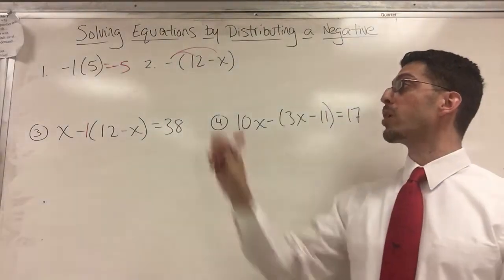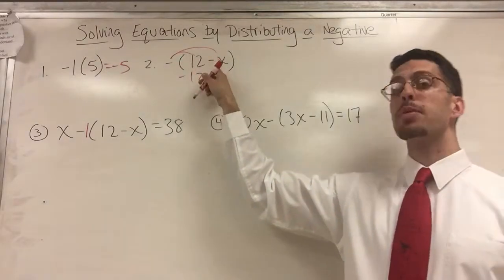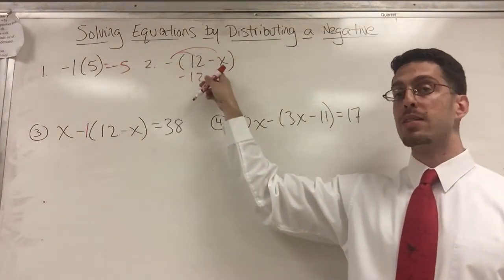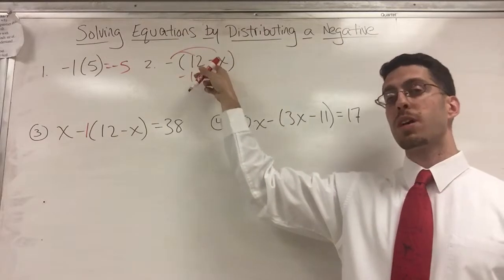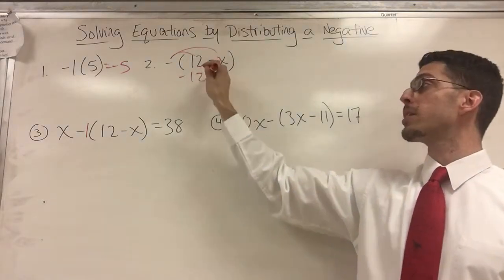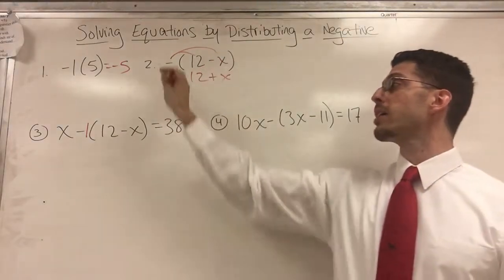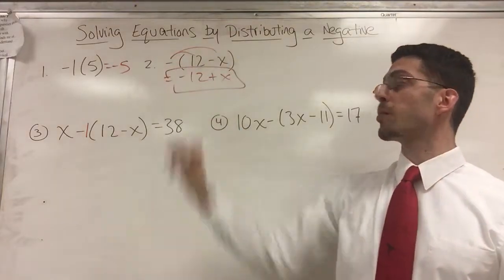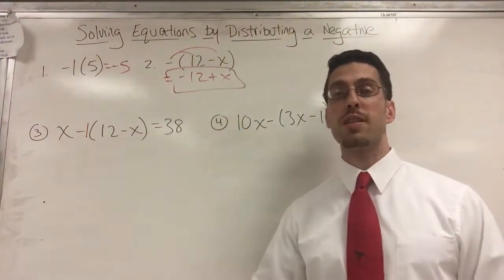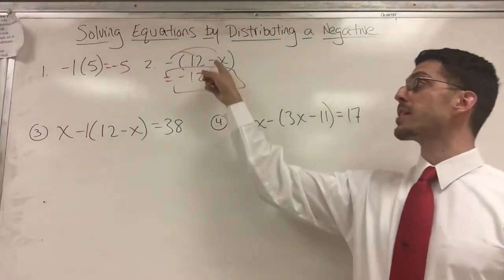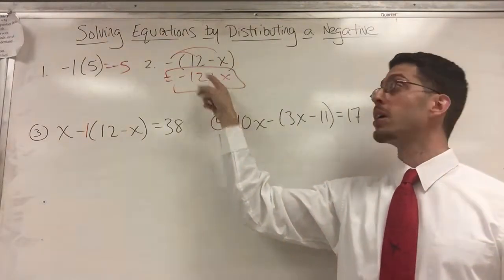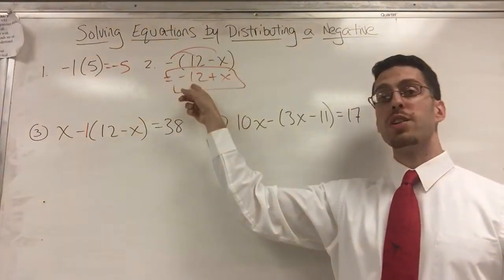And you should know that the opposite of a negative number would bring you back to a positive number. Opposites just means change the sign. So what's the opposite of 12 minus X? What is negative times 12 minus X? Well, I'm distributing that negative sign or that opposite. So the opposite of 12 is negative 12, and the opposite of a negative X or minus X is a positive X.